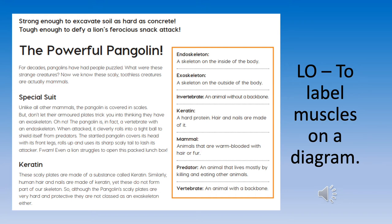When attacked, it cleverly rolls into a tight ball to shield itself from predators. The startled pangolin covers its head with its front legs, rolls up, and uses its sharp scaly tail to lash its attacker — wham! Even a lion struggles to open the packed lunch box.